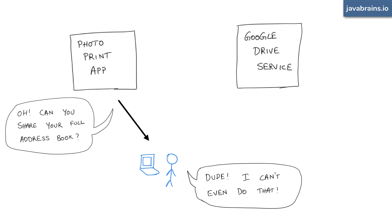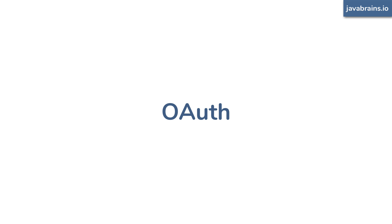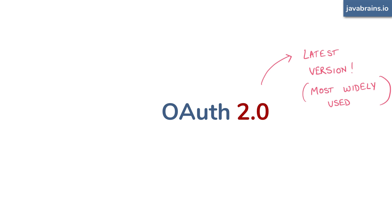This is where OAuth comes in — to solve the problem of services trying to access each other on behalf of the user. There was a standard created called OAuth. There was a version 1.0, OAuth 1.0, but the current and most widely used version is OAuth 2.0. In this and subsequent videos in this series, when I say OAuth, just assume I'm referring to OAuth 2.0.